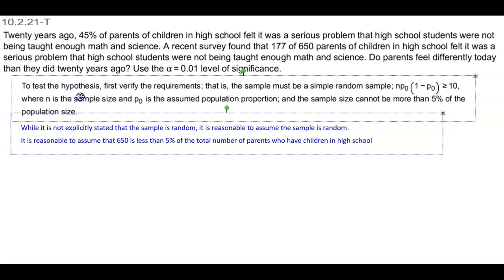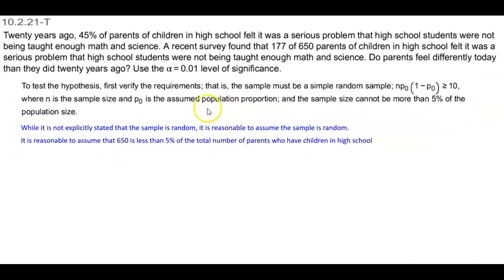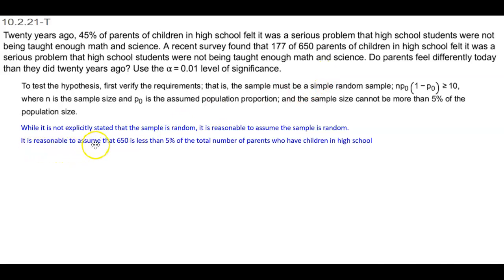To test the hypothesis, we always have to first verify the requirements. First, the sample must be a simple random sample. While it is not explicitly stated that the sample is random, it is reasonable to assume the sample is random. It is also reasonable to assume that the 650 is less than 5% of the total number of parents who have children in high school.